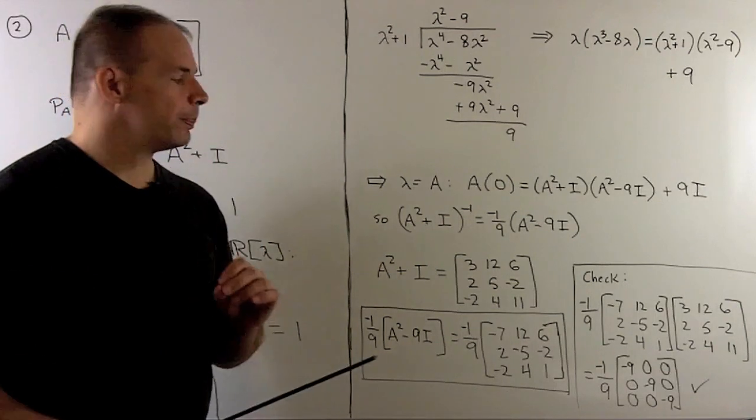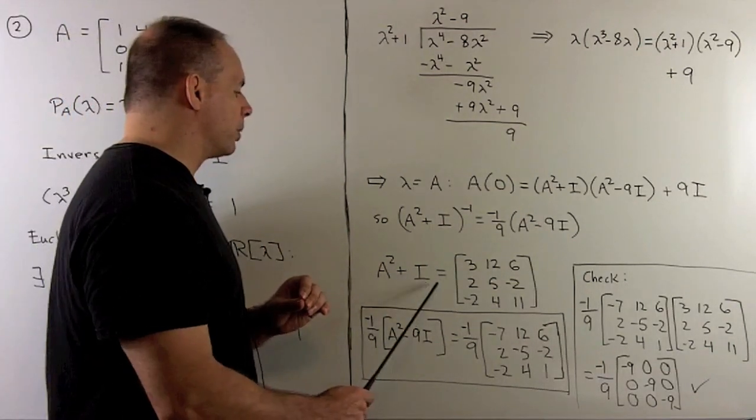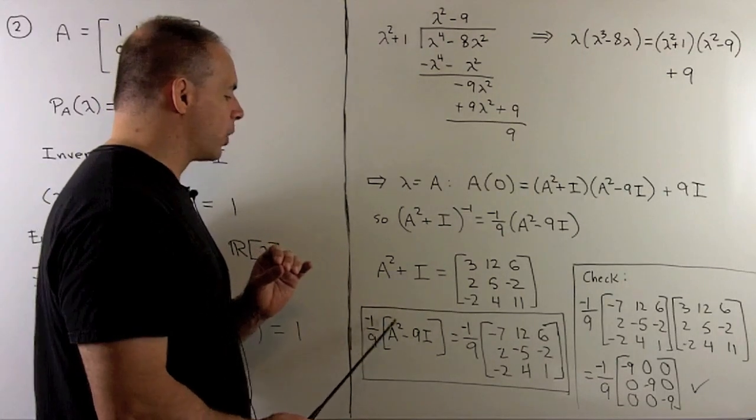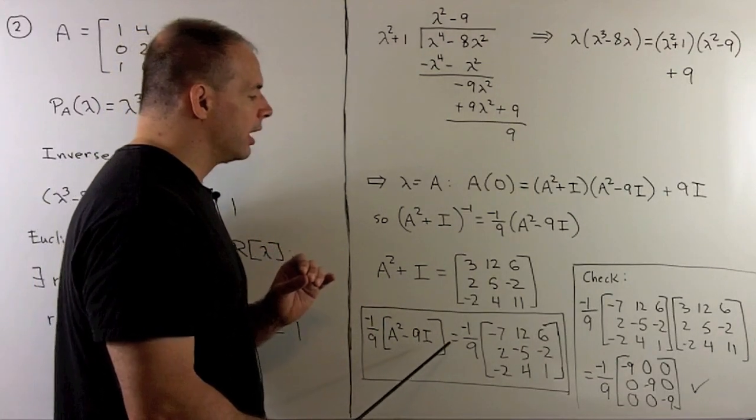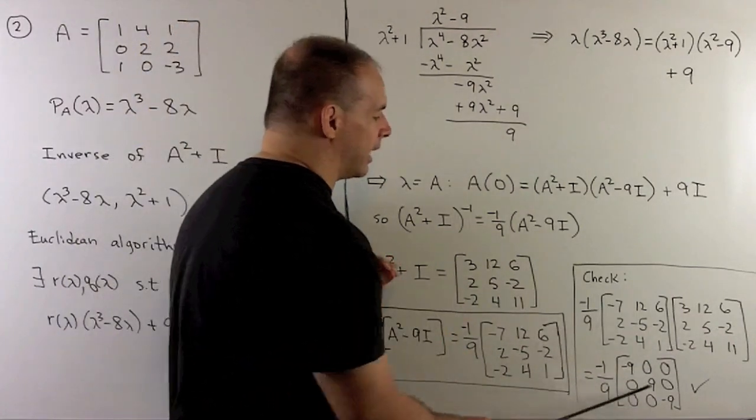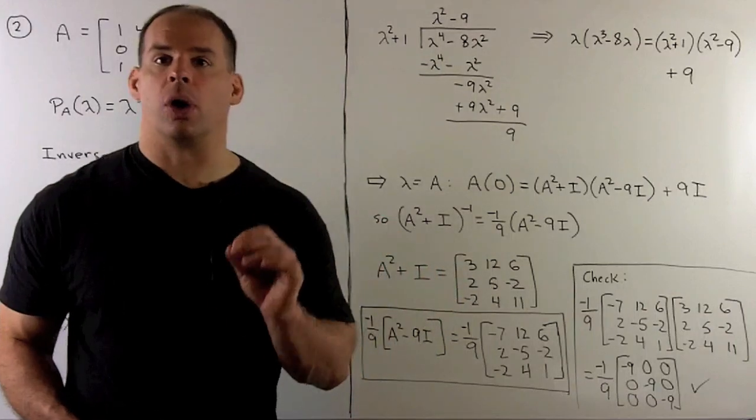We check our work. So, we work out A squared plus I. We work out the inverse minus one-ninth A squared minus 9I. If we multiply these two matrices together, we get the identity matrix, and that checks our work.